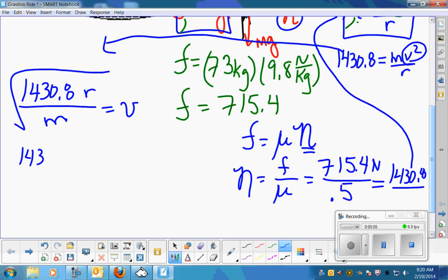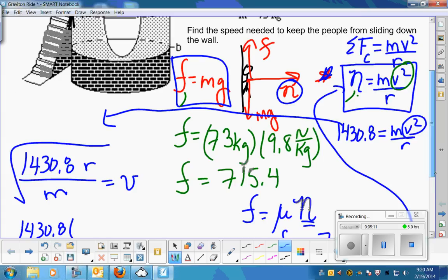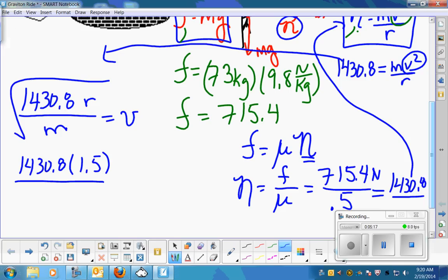So 1430.8, the radius of curvature is 1.5 meters. The mass - see, here's that mass coming back in there. See, it would divide away. Okay, I multiply by it, now I'm going to divide by it. The mass is 73, and then we've got to take the square root of that and figure out this speed.